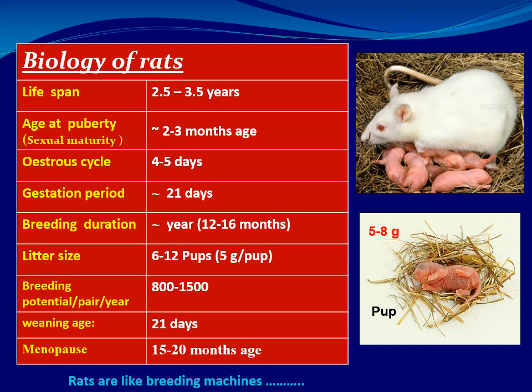Weaning age is about 21 days, and menopause in females is reached at 15 to 20 months of age. So rats are considered like breeding machines.